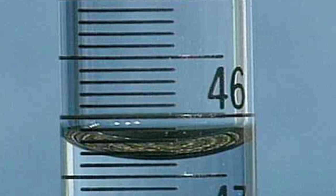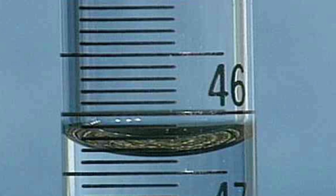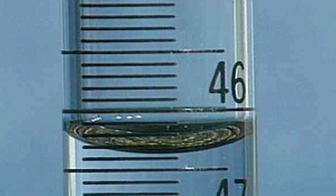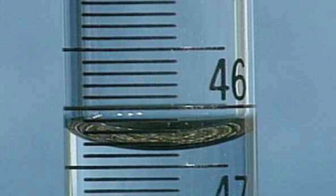A meniscus is the curved upper surface of a liquid in a tube. It occurs because the water molecules in contact with the glass begin to crawl up the edge of the container.